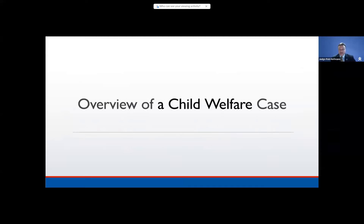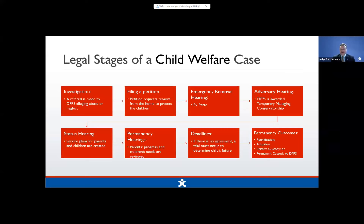Now we're going to talk about the overview of a child welfare case from beginning to end. Here are the legal stages: we have an investigation stage when a referral is made to DFPS — someone calls in an allegation of abuse or neglect to the hotline, or a teacher or law enforcement officer makes that referral. Then, potentially, there is the filing of a petition, where the agency files a legal petition requesting the court approve the removal of the child from their home to protect the child.